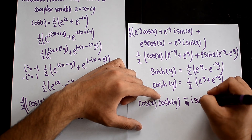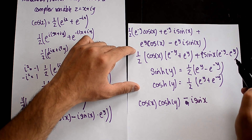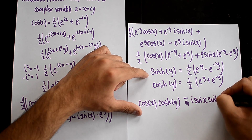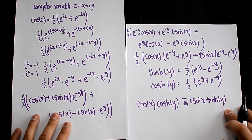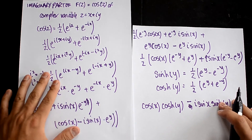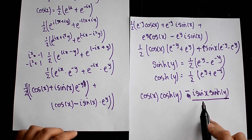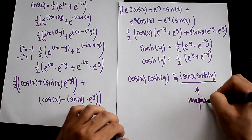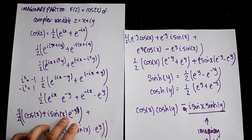So i sin x multiplied by replacing this gives e^(-y) minus e^(y), which is negative sinh y. That is now the complete form. The question asked for the imaginary part of f(z), so the imaginary part is the coefficient of i — which is negative sin x times sinh y. That is your answer.